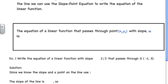Section 6.5 — slope-point form of the equation of a linear function. When we know the slope of a line and we know the x and y coordinates of a point on that line, we can use the slope-point equation to write the equation of the linear function. The equation of a linear function that passes through a known point (x₁, y₁) with slope m is: y minus y₁ is equal to m times (x minus x₁).